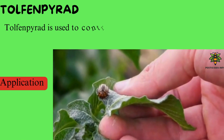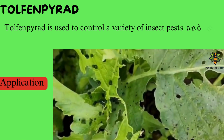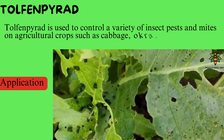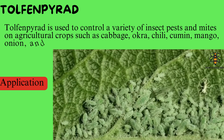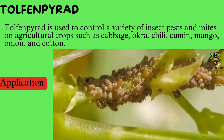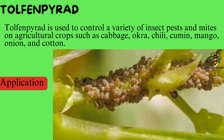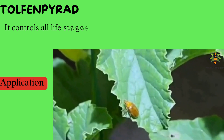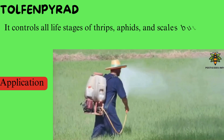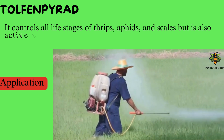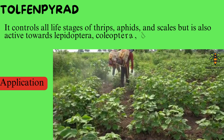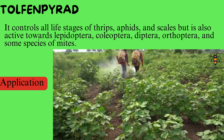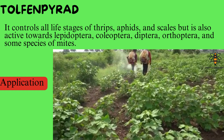Uses. Tolfanpirad is used to control a variety of insect pests and mites on agricultural crops such as cabbage, okra, chili, cumin, mango, onion, and cotton. It controls all life stages of thrips, aphids, and scales, but is also active towards lepidoptera, coleoptera, diptera, orthoptera, and some species of mites.